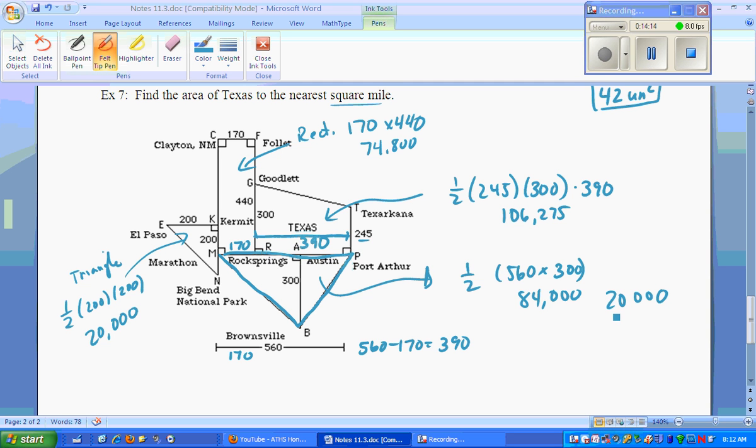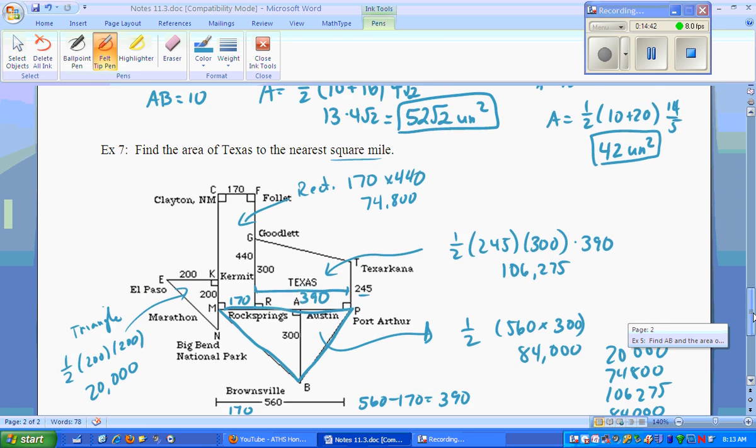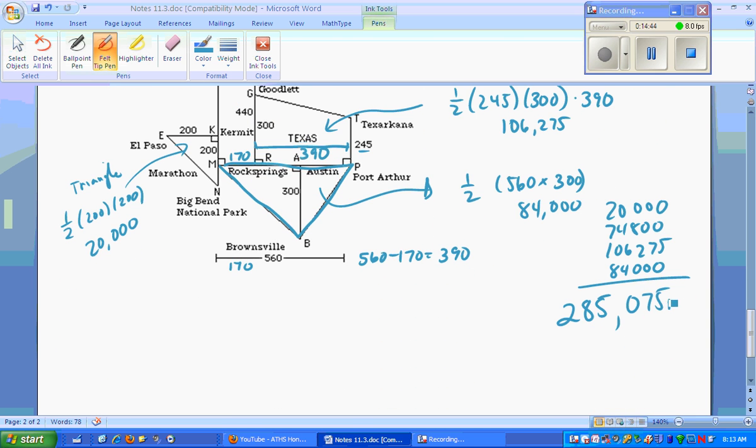And then add it all up. 20,000, 74,800, 106,275, and the 84,000. Put it together. Final answer, lock it in, 285,075. And then they say what kind of units we are. Yeah, I did. They said up at the top they were square miles. So we got miles squared.